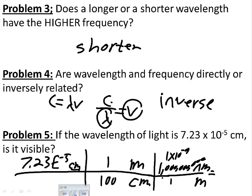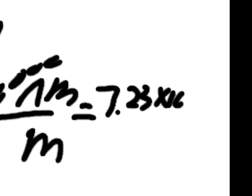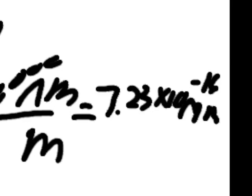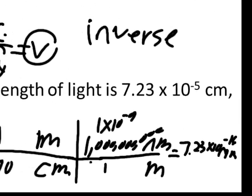And that gives you an insanely small number. 7.23 times 10 to negative 16th nanometers. And obviously that's well short of our 400 nanometer mark. So it's not visible either.